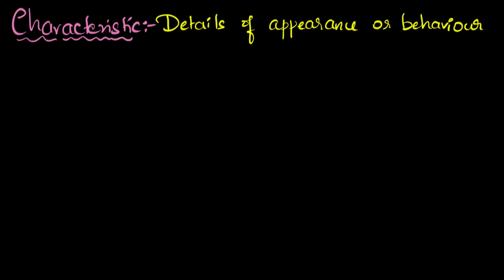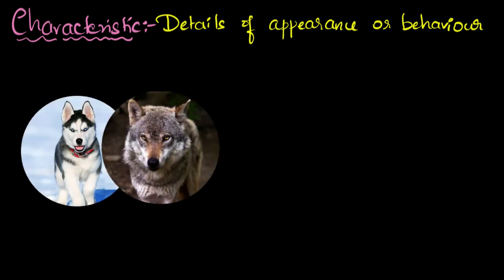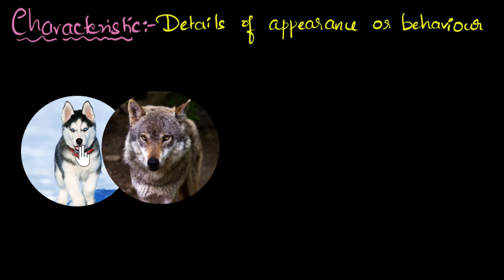Let's take an example. If you take dogs and wolves, they are very closely related because they share a lot of common characteristics. From their appearance, there is so much in common — the way they walk, the way they eat their food, their anatomy, their looks, the fur they have. Their behavior also — they are both social animals. There are so many common characteristics, so we say they are very closely related.